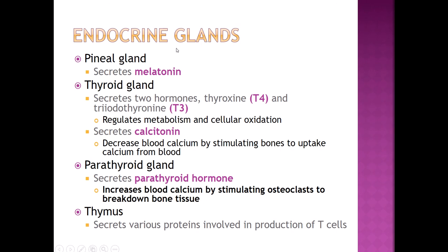The pineal gland makes one hormone, melatonin, which helps put us to sleep. The thyroid gland secretes three hormones — two related ones: thyroxine (T4) and triiodothyronine (T3). They are structurally similar except T4 has four iodine molecules and T3 has three. T3 and T4 are our major metabolic hormones — they increase our metabolic rate and help some other organ systems develop. Calcitonin also comes from the thyroid gland; it is an antagonist to parathyroid hormone and decreases blood calcium levels, usually stimulating bones to absorb calcium from the blood and form new bone tissue.